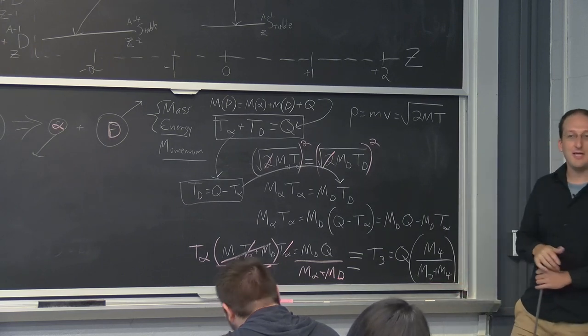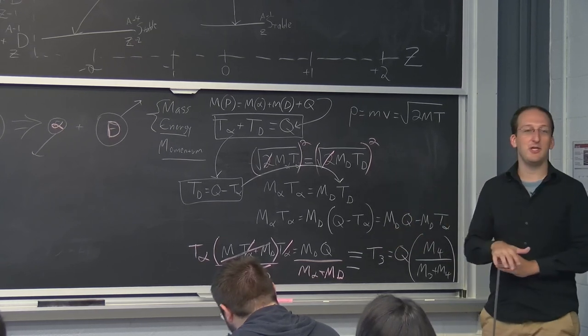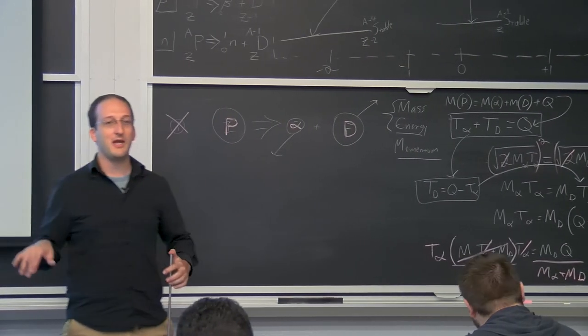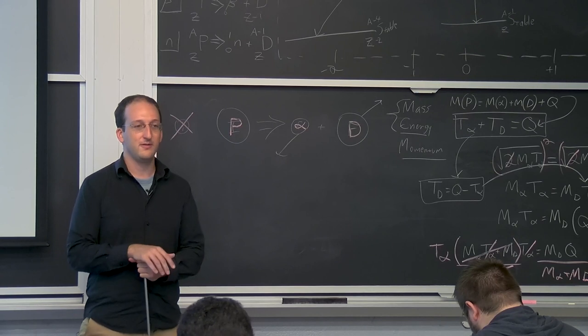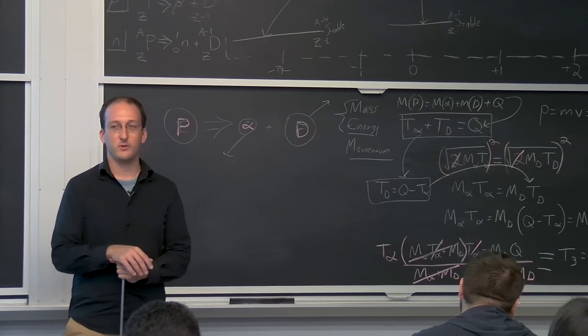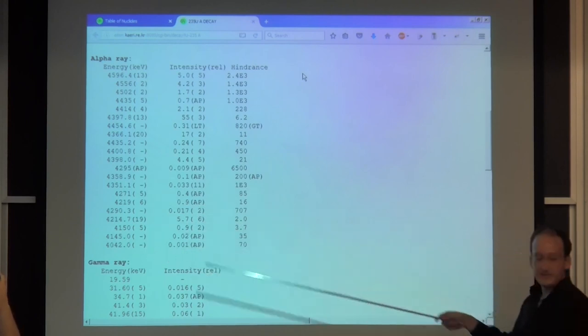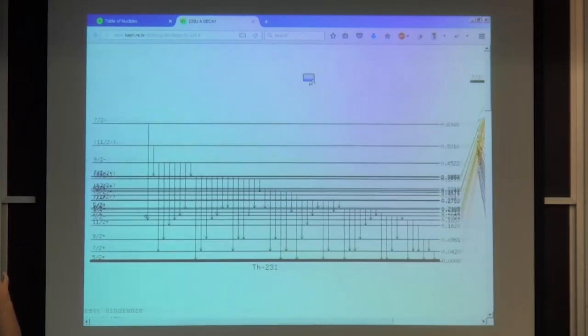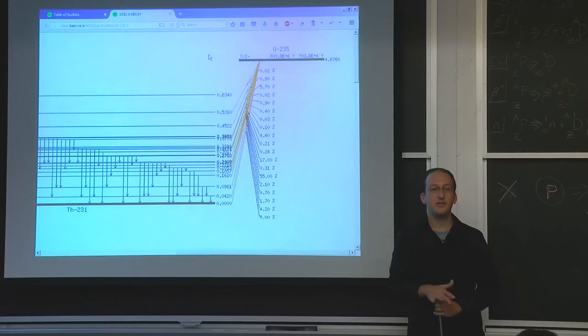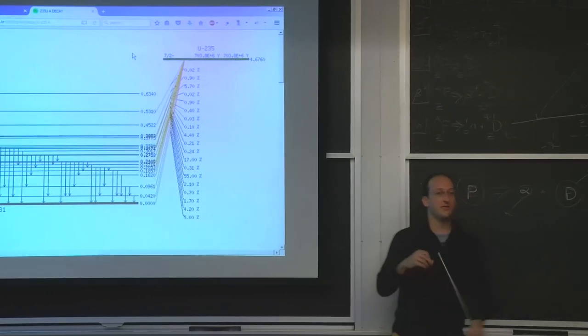The kinetic energy alpha is just the Q value times the ratio of the daughter mass to the total mass. This should look awfully familiar. When we did this in the frame of neutron elastic scattering, we had the same equation with just different notation. It's the exact same result, just different notation.